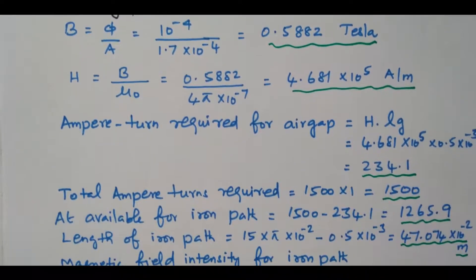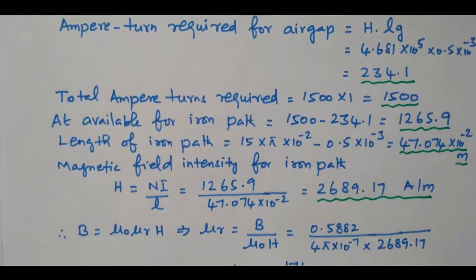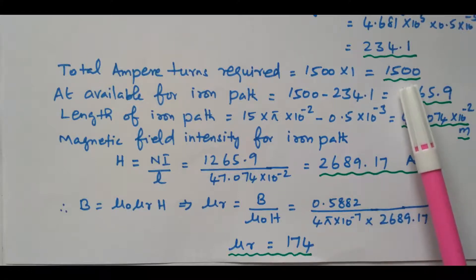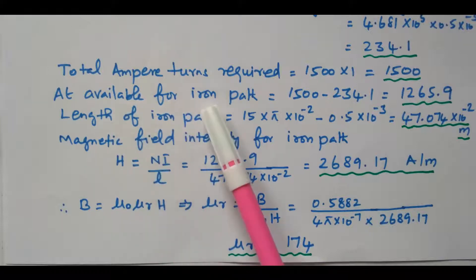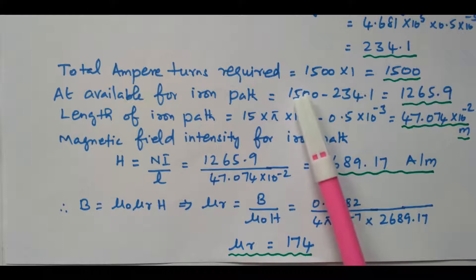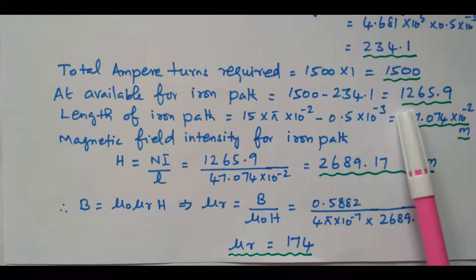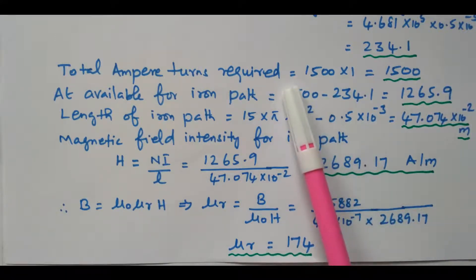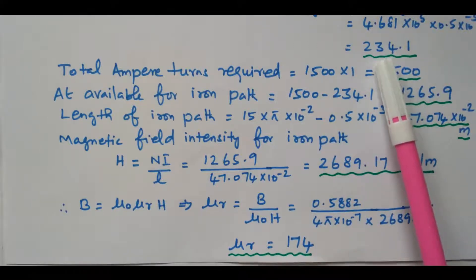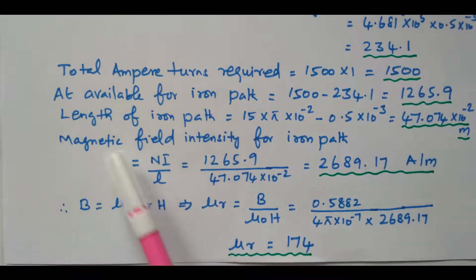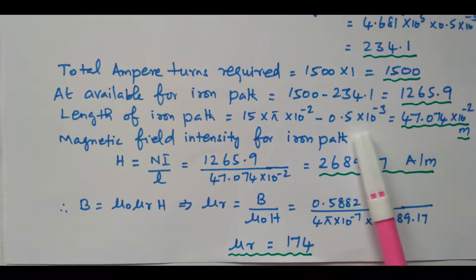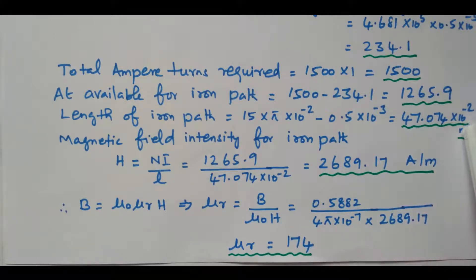Now we will find the total MMF required, which is 1500 × 1 = 1500 ampere turns. The MMF for the iron path equals the total MMF minus the air gap MMF: 1500 − 234.1 = 1265.9 ampere turns. The length of the iron path is the total length 2πRm minus the air gap length: 15π × 10⁻² minus 0.5 × 10⁻³, giving 47.074 × 10⁻² m.